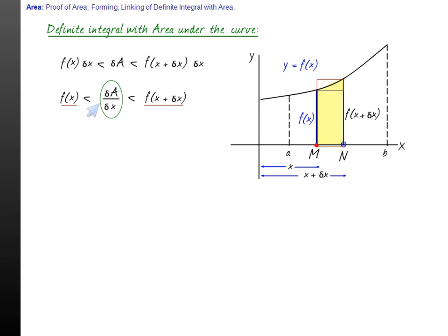And hence we obtain limit delta x approaches 0, delta A by delta x equals f(x). Remarkable - rate of change of area with respect to x coordinate is equal to value of the ordinate at x, f(x). And this of course equals dA by dx.